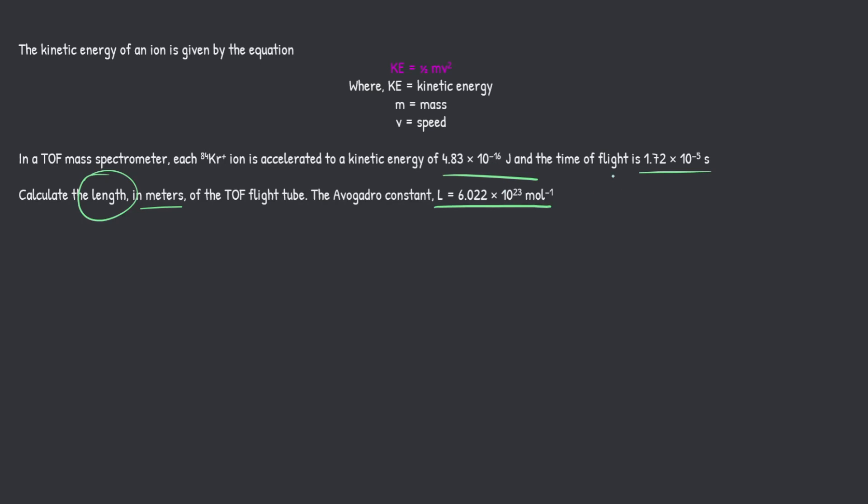So kinetic energy, do we have that? Yes, we do. It's given right here. Mass, do we have that? No, we don't, but we can calculate from this because they've given us the mass number of the ion, so we can calculate that.